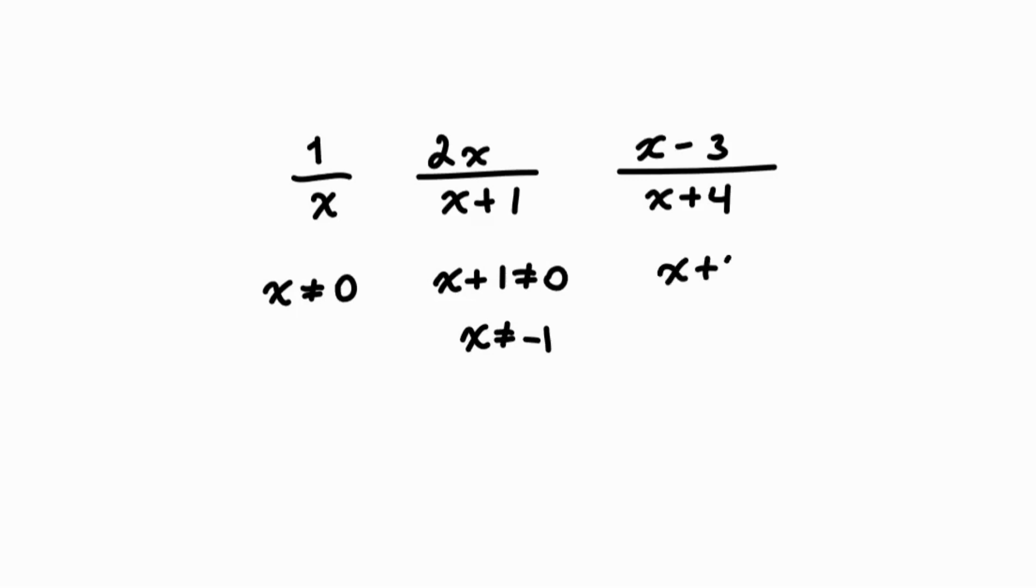Here, x plus 4 cannot equal 0, so x cannot equal negative 4. If you tried subbing in those values in for x in the denominator, you will see that you will end up with a 0.